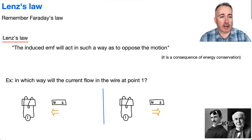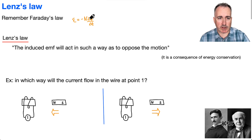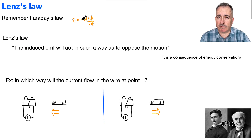We're going to look at, first of all, Faraday's Law, just to remind ourselves: the induced EMF was equal to minus N delta phi delta T. In other words, the induced EMF was proportional to the rate of change of flux linkage.